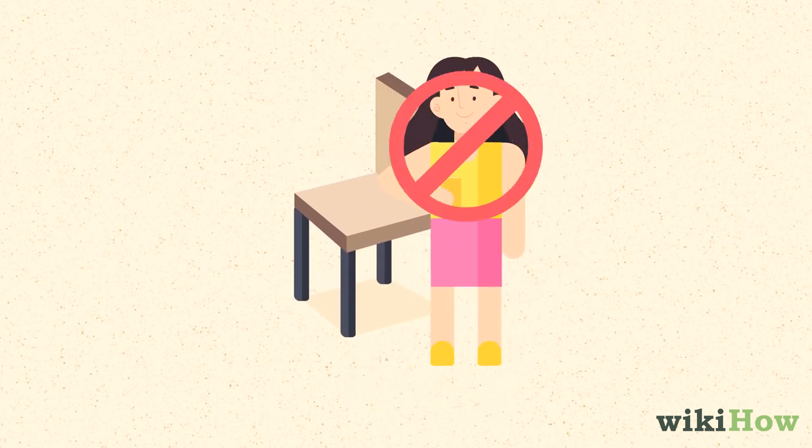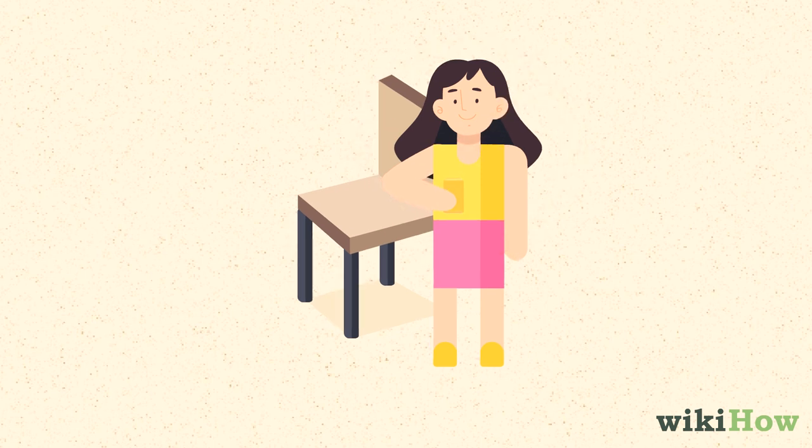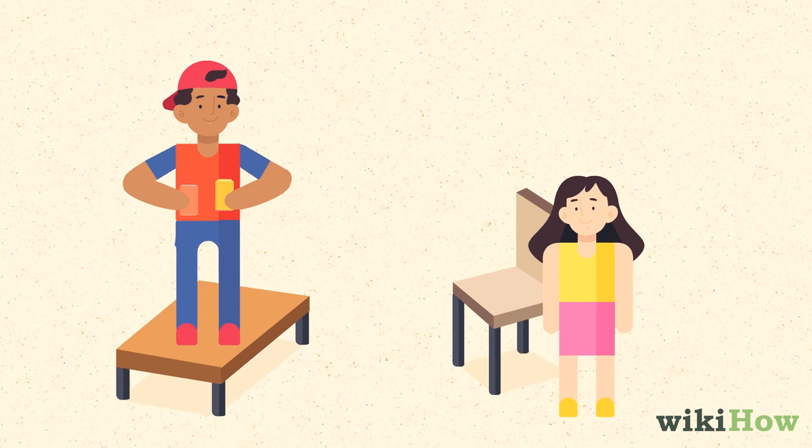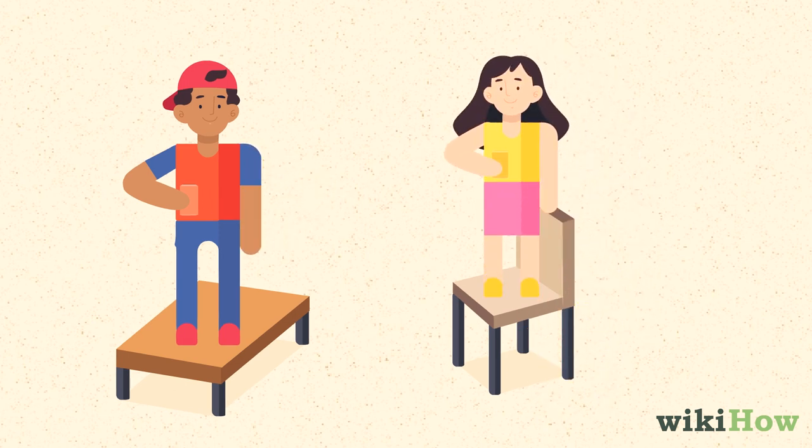A player is also out of the game if they accidentally touch the lava. A player can open and finish a non-pawn beer to re-enter the game at any time.